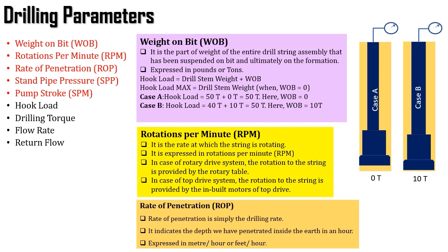Coming to the Drilling Parameters, we will be discussing Weight on Bit, RPM or Rotation per Minute, ROP or Rate of Penetration, Standpipe Pressure, Pump Stroke, Hook Load, Drilling Torque, Flow Rate and Return Flow. It is very essential for us to know about these parameters in detail because we will be using these concepts when we are discussing our advanced topics, so we should be well aware of all these concepts.